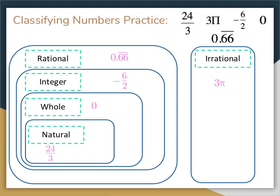Were you able to get all the numbers in their correct location? Let's talk about why the numbers are in their positions. 0.66 repeating is a decimal, so it's automatically not an integer, whole number, or natural number. It is repeating, so it falls in the rational category. Negative 6 halves reduces: 6 divided by 2 gives negative 3, which is an integer — no decimal, no fraction, but it is negative. Zero is the only whole number that is not a natural number; it is an integer and rational. 24 divided by 3 equals 8, which is one of the counting numbers, making it a natural number. And 3 times pi — anytime pi is involved, no matter what it's multiplying, adding to, or just pi by itself, it is an irrational number.